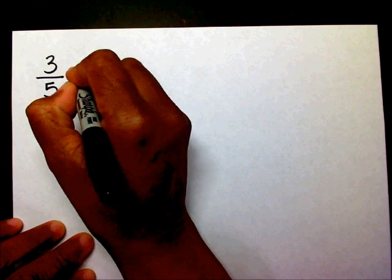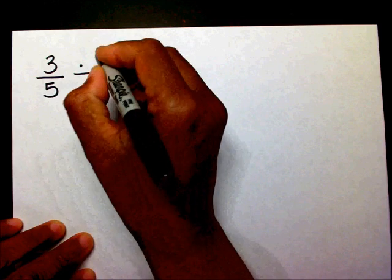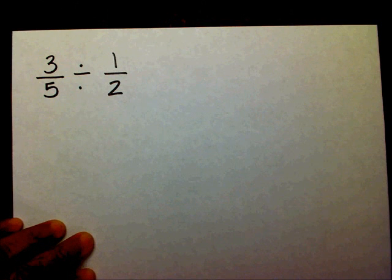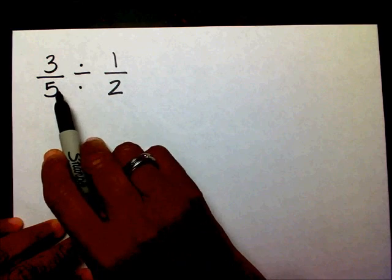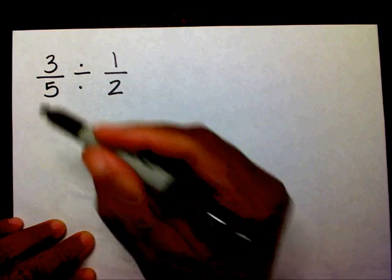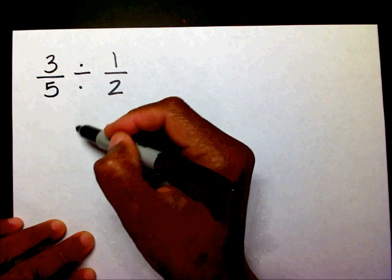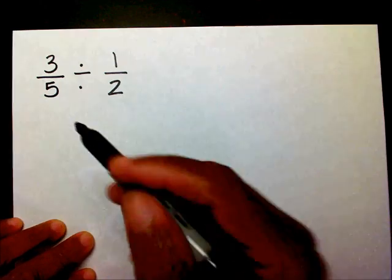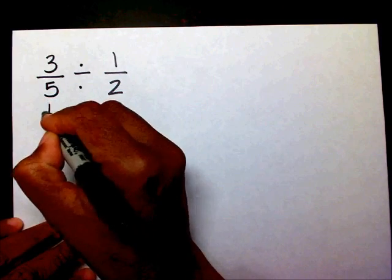Alright, so let's say we had three-fifths divided by one-half. Three-fifths divided by one-half. Alright, whenever you divide fractions, what you want to do, you want to change your division into a multiplication problem. And the way you do that, you want to bring your three-fifths down.